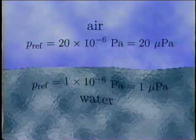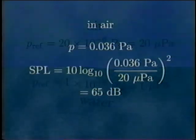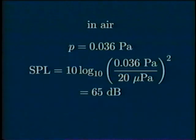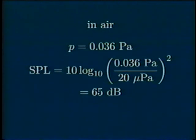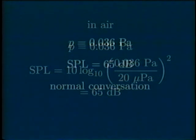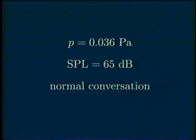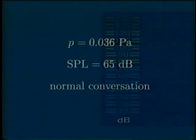To get an idea of how pressure and sound pressure level relate, here is an example calculation where air is the supporting medium. We have an acoustic pressure level of 0.036 pascals. The sound pressure level is then calculated to be about 65 decibels. This is the approximate sound pressure level for normal conversation.